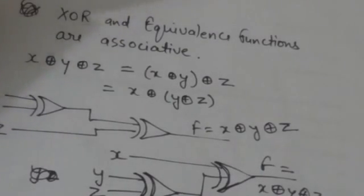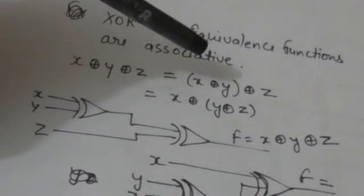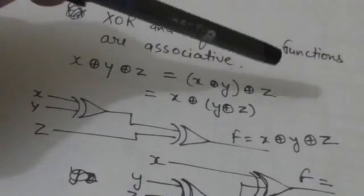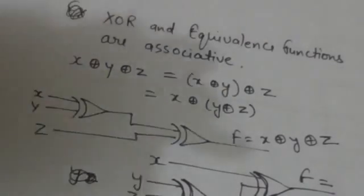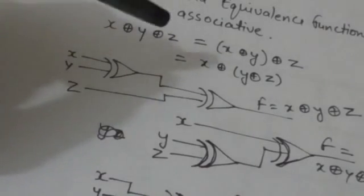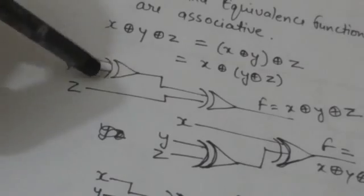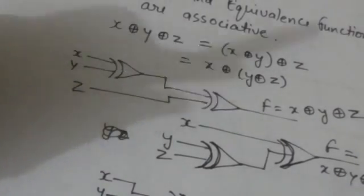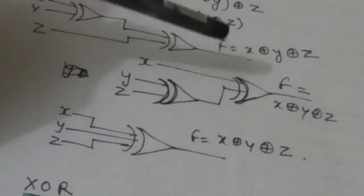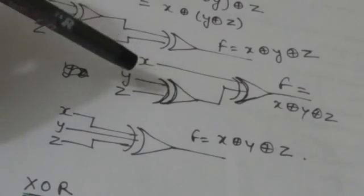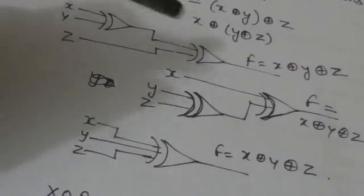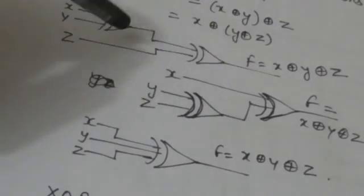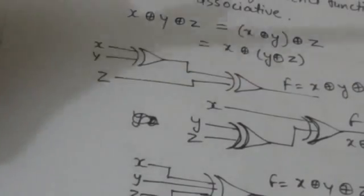XOR and equivalence functions are associative. This means the result of X XOR Y, when XOR'd with Z, equals X XOR'd with the result of Y XOR Z. This logic diagram represents X XOR Y, then XOR'd with Z, and this diagram represents X XOR'd with the result of Y XOR Z. Both circuits give the same output for the same input values of X, Y, and Z.